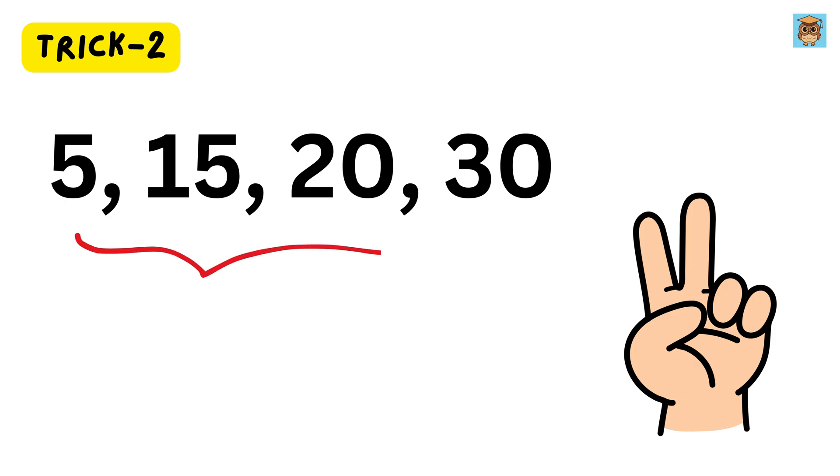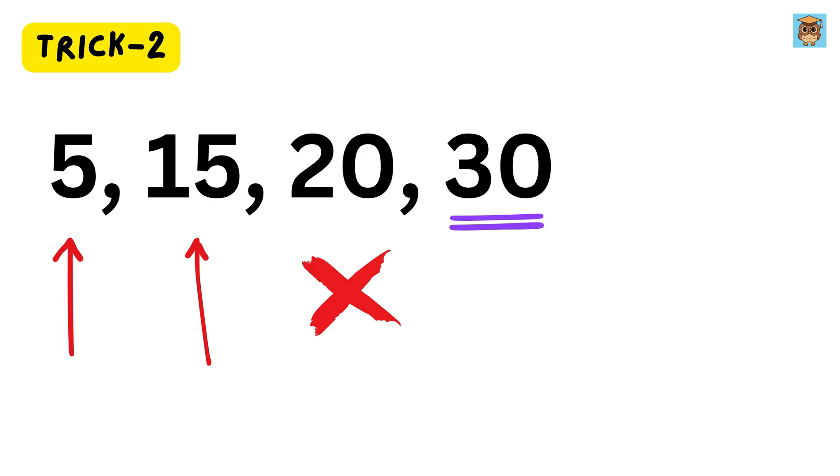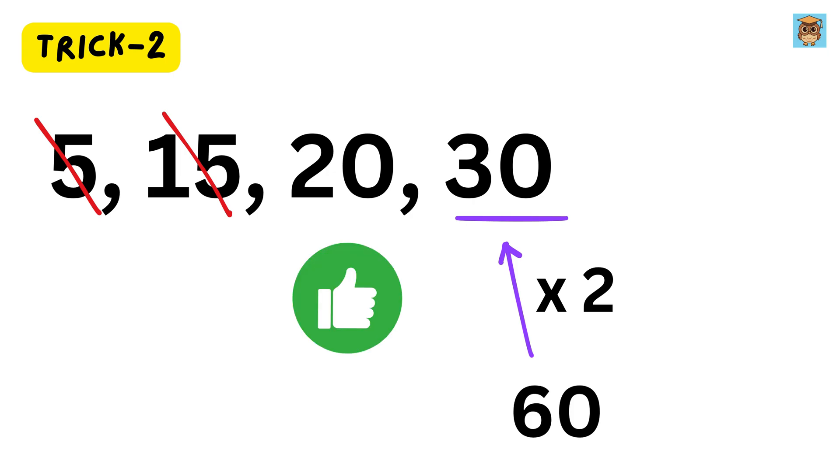Trick 2. Now we will take numbers 5, 15, 20, and 30, and find its LCM. Unlike the previous trick, the largest number, 30, can be divided by 5 and 15, but it cannot be divided by 20. Now, when the bigger number can be divided by the smaller numbers, first of all, simply cancel those smaller numbers. So, 5 and 15 are cancelled. We are left with 20 and 30. Now, we will change the bigger number such that it is divisible by 20. So, I will multiply 30 with 2 and make it 60, which is now divisible by 20. So, cancel it as well, and therefore the LCM of these numbers is 60.